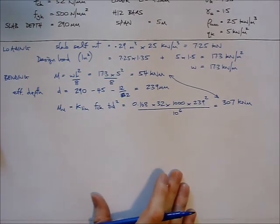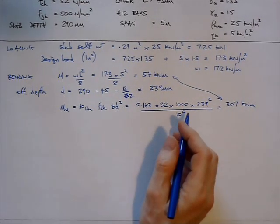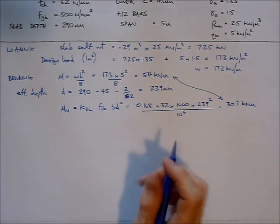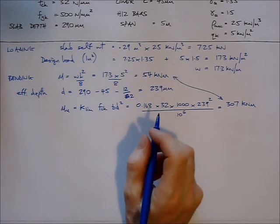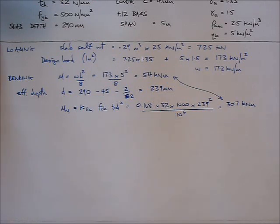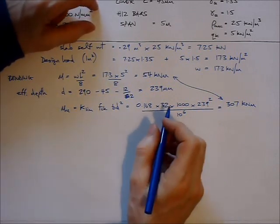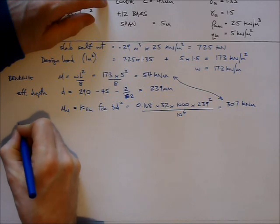Now I've checked MU, I can go on to try and find Z, which is the lever arm between the compression in the concrete and the tension in the reinforcement. And I do this in two stages, making use of a little graph from an IStructE publication.